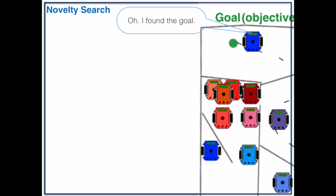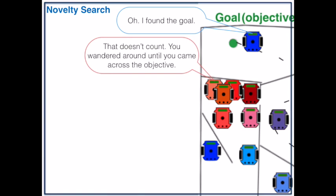While the novelty search robots do find the goal, some researchers are a bit doubtful concerning how the task was solved. That doesn't count. You wandered around till you came across the objective. It's like you're just doing a random search.